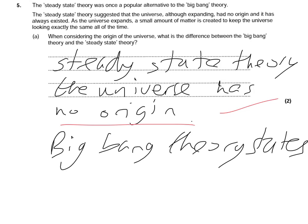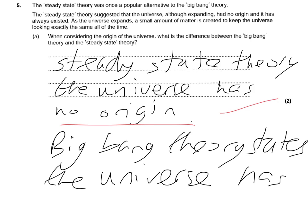So the Big Bang Theory states the universe has an origin. You don't need to know anything else or go into anything else — it's just the idea that the universe has an origin, and that gives you the second mark. Now, there's not much leeway in the mark scheme. You need to basically say the steady state theory says the universe has no origin, and the Big Bang Theory states that the universe has an origin.